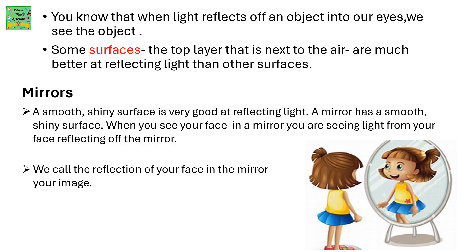When light reflects off an object into our eyes, we see the object. Some surfaces — the top layer next to the air — are much better at reflecting light than other surfaces. Mirrors: a smooth, shiny surface is very good at reflecting light. A mirror has a smooth, shiny surface. When you see your face in a mirror, you are seeing light from your face being reflected off the mirror. We call the reflection of your face in the mirror your image.